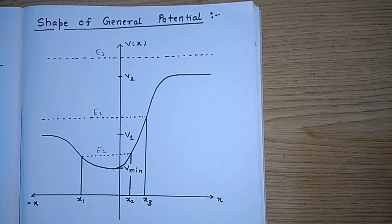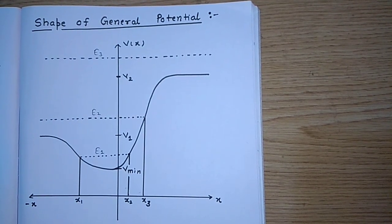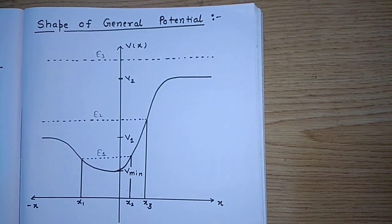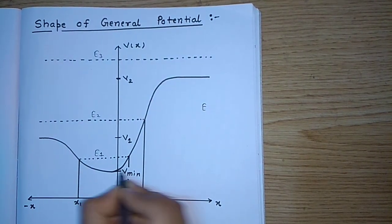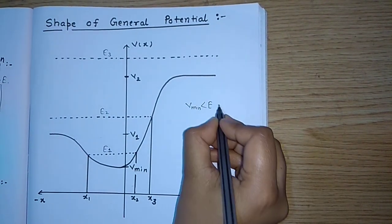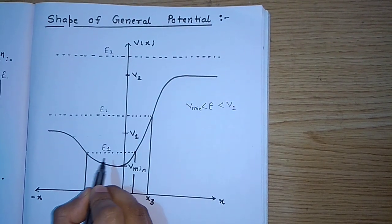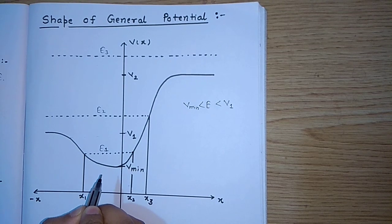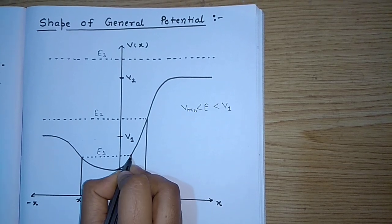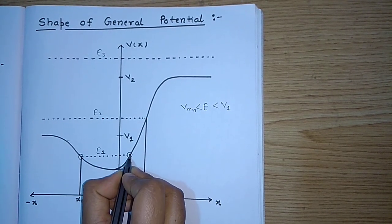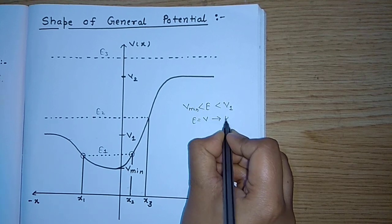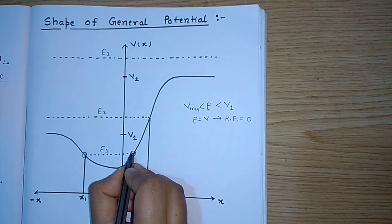Let us consider the condition of the bound state. When the particle has energy E1, we can say the energy E is greater than V minimum and less than V1. In that case, the energy of the particle is always greater than the potential. There are two points where the energy becomes equal to the potential, that is E equals V. When E equals V, the kinetic energy equals zero, which means we have two turning points.